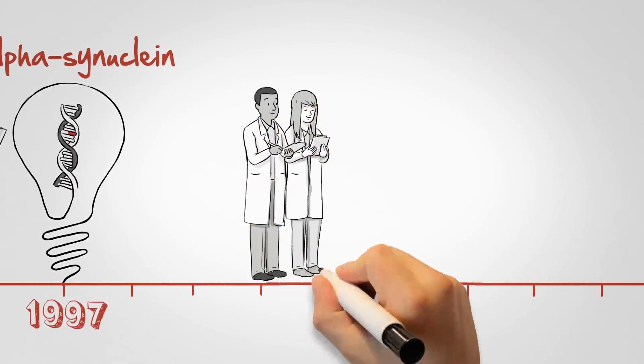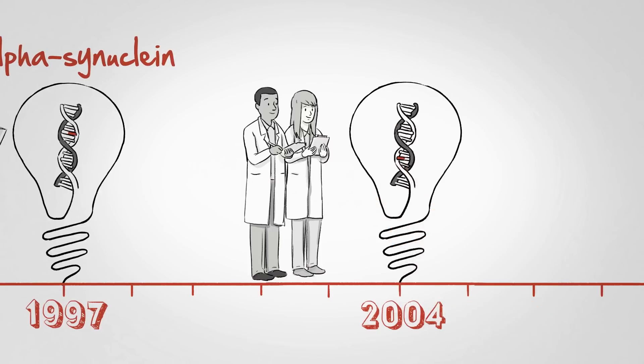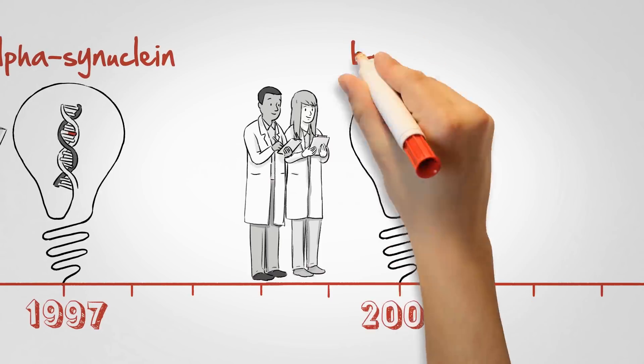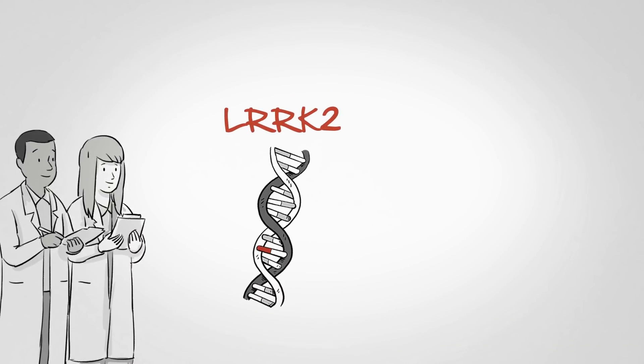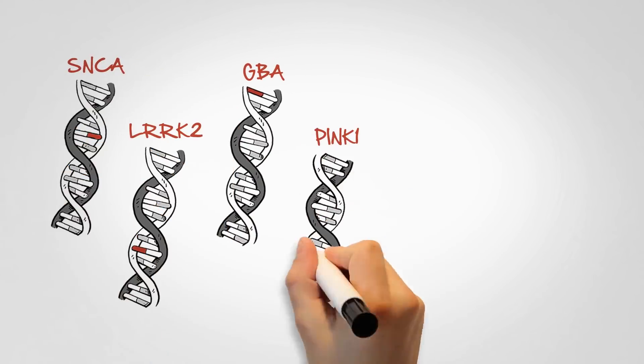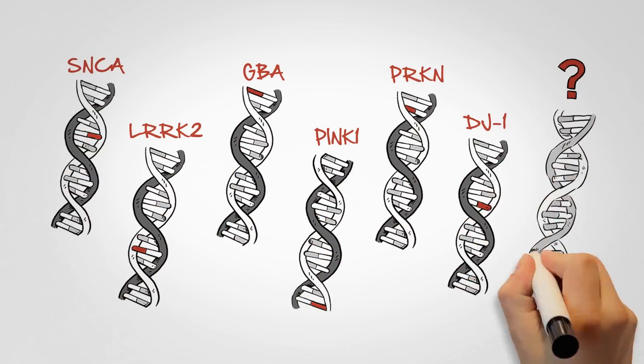In 2004, another genetic mutation linked to Parkinson's was discovered, this time in a gene called LRRK2. And around the same time, scientists uncovered a Parkinson's connection with mutations in a gene called GBA. Now, more genetic contributors to Parkinson's are still being uncovered, all the time.